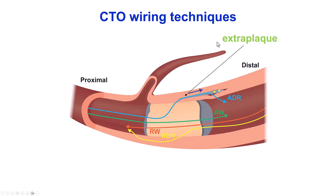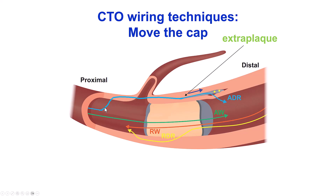These techniques are part of the antegrade dissection and re-entry. Antegrade dissection and re-entry involves advancement of the guide wire in the extra-plaque space — what we previously used to call the subintimal space — followed by re-entry into the distal true lumen. The move-the-cap techniques intentionally create an entry into the extra-plaque space proximal to the proximal cap, which is why they are called move-the-cap techniques.